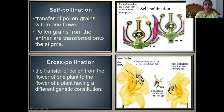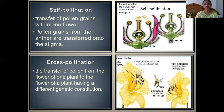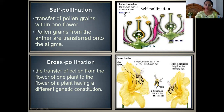In the slide, through a diagrammatic view, the different modes of pollination are explained. In self-pollination, transfer of pollen grains occurs within one flower only — pollen grains from the anther are transferred onto the stigma of the same flower. Plant A is only involved in this process; plant B is not involved. So pollen located on the stamen moves to the pistil of the same plant.